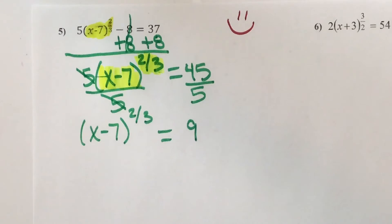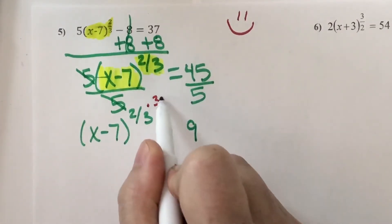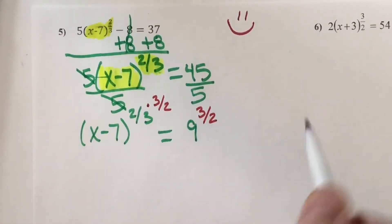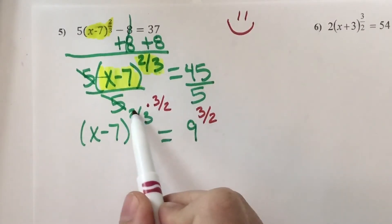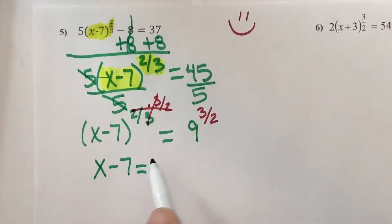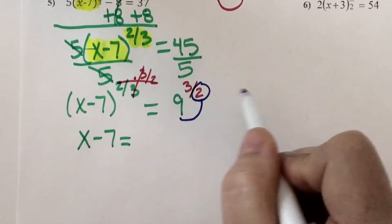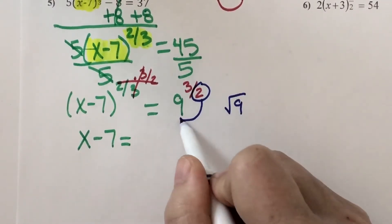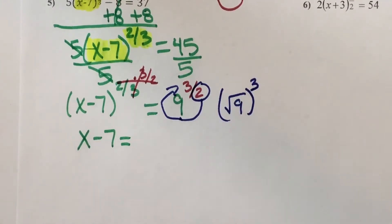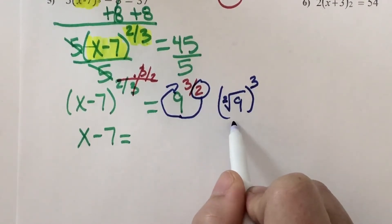This is when I'm ready for my reciprocal exponent. So if I flip that fraction over, I get 3 over 2. The 2's and 3's cancel out. You're left with x minus 7. And then this side, I need to go around the world and figure out what it is. It's telling me to take the square root of 9 and raise it to the third power. Am I taking an even root here? Yep — 2 is an even number. And when you take an even root, there's a plus minus.